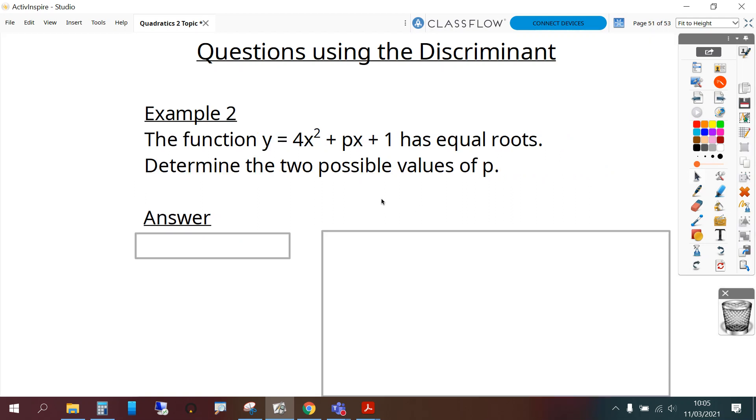Example 2. The function y equals 4x squared plus px plus 1 has equal roots. Determine the two possible values of p. So again we start with a, b and c. a is 4, b is p and c is 1.